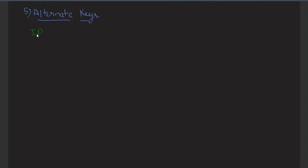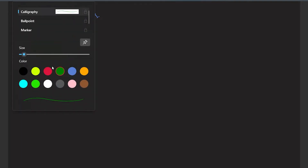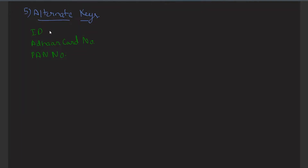For example, if we have ID, Aadhaar card number, and PAN number — these three as the candidate keys — and the database administrator takes one as the primary key, then the remaining two will be called as the alternate keys. All three will be called as the candidate keys.